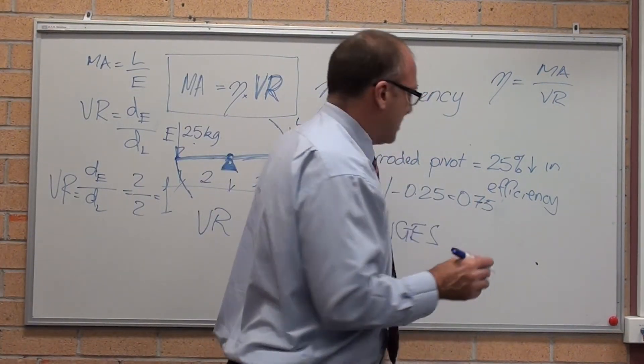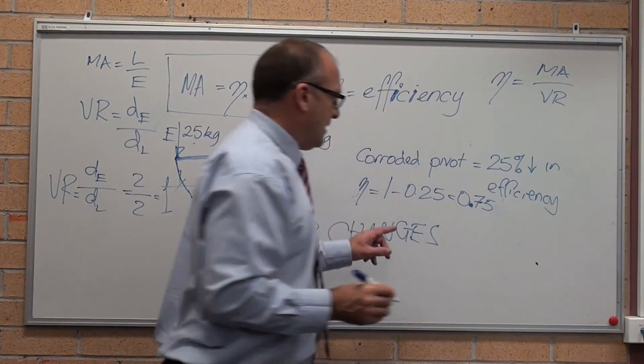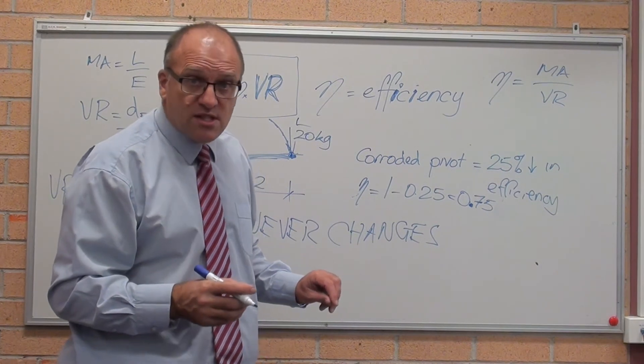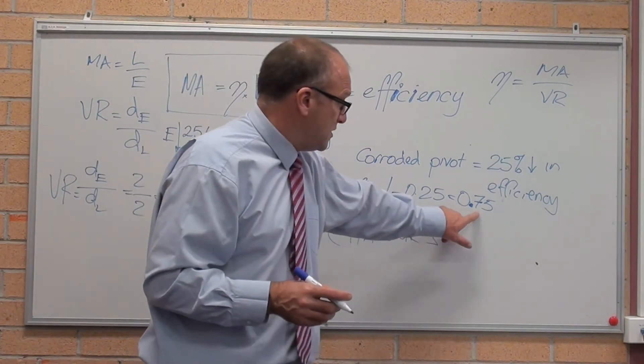Please remove the percent. It's 75% efficiency, or 0.75. Efficiency is 1 minus 0.25 is 0.75.